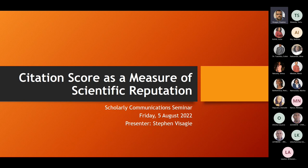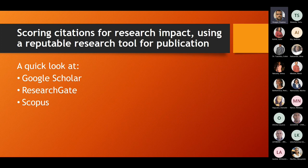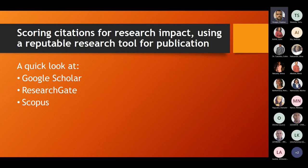Which citation scores should you be using as a measurement of your scientific reputation? We're going to deal mostly with the three most common ones: Google Scholar, ResearchGate, and Scopus. Web of Science is also available, though we don't subscribe to it. Web of Science and Scopus are pretty similar in the way they score articles and research.